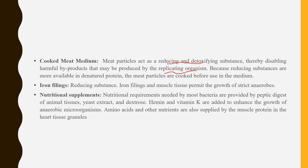Nutritional requirements needed by most bacteria are provided by a peptic digest of animal tissue. Yeast extract is a great source of vitamin B family. Dextrose is a carbohydrate energy source. Haemin and vitamin K are added to enhance the growth of anaerobic microorganisms. Amino acids and other nutrients are also supplied by the muscle protein in the heart tissue granules.